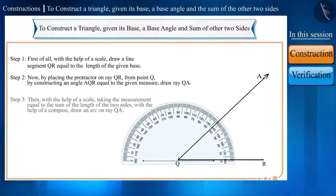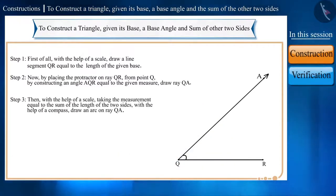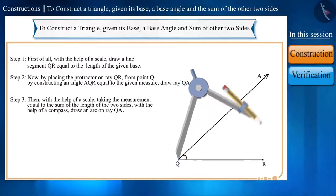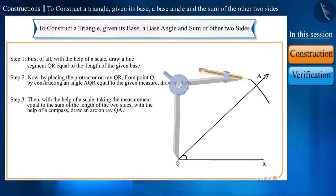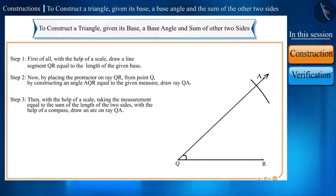Then, with the help of a scale, taking the measurement equal to the sum of the length of the two sides, with the help of a compass, draw an arc on ray QA. Let's name this point as point B.